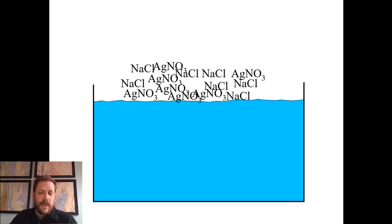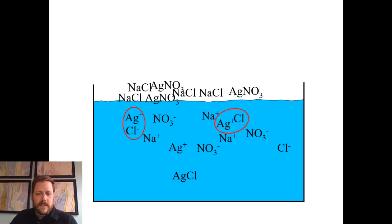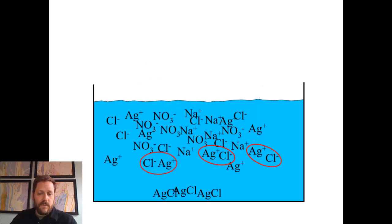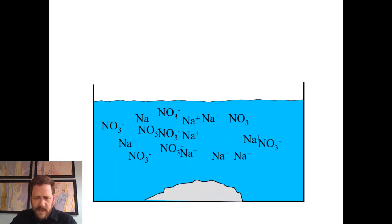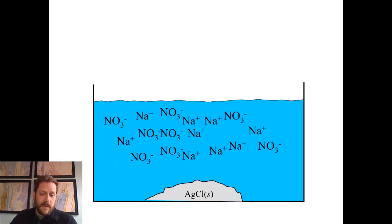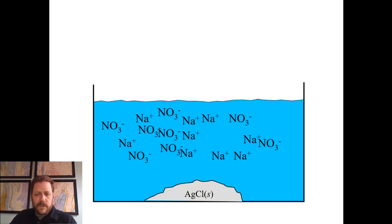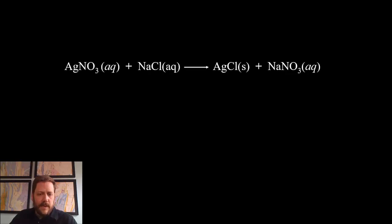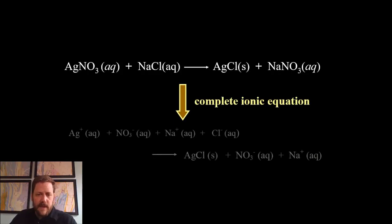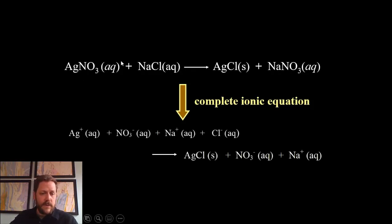You can see the same thing modeled with many, many formula units of those compounds. Eventually all the silver ions and chloride ions find each other and form the white precipitate at the bottom of the container. All that's left in aqueous solution is sodium ions and nitrate ions. This is how we analyze double displacement reactions — we write what's called a complete ionic equation, based on the principle that any soluble ionic compound truly exists as ions in aqueous solution.